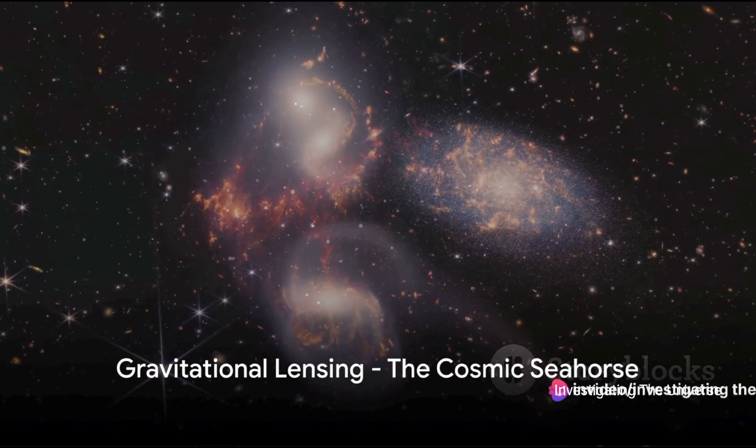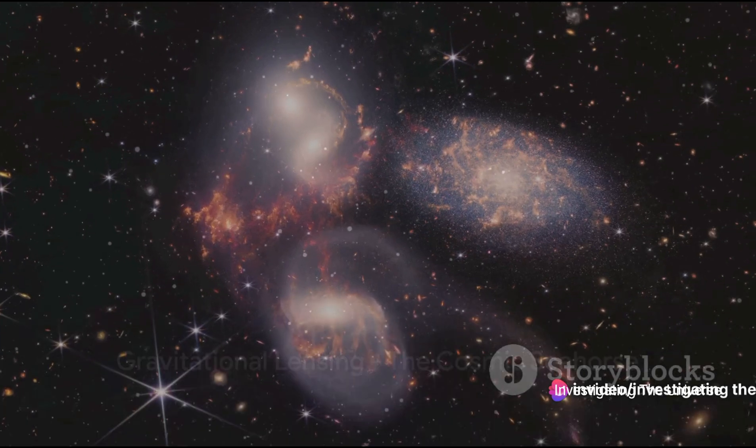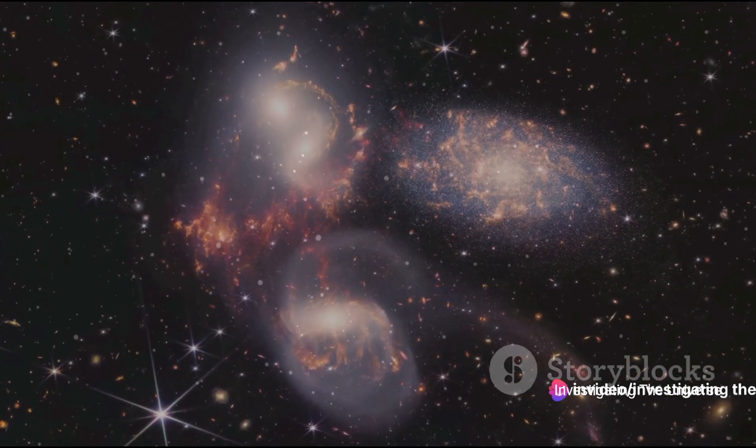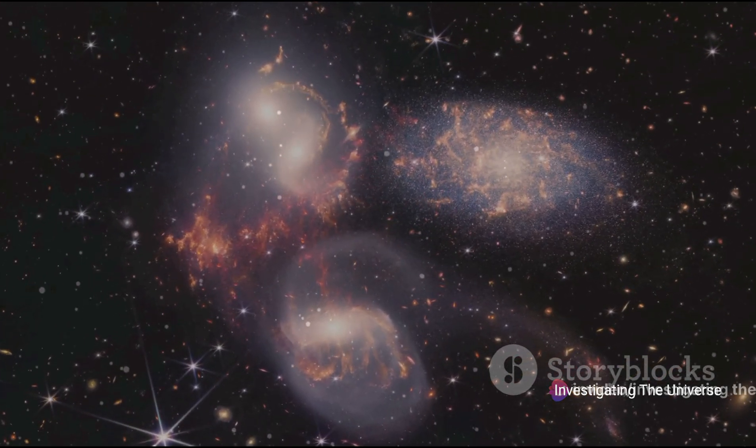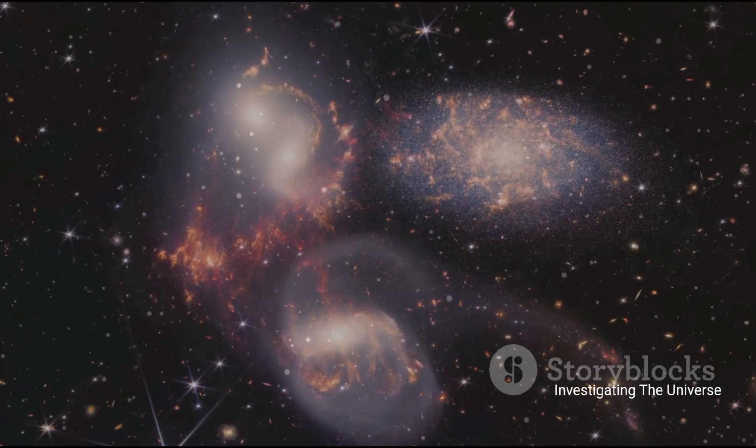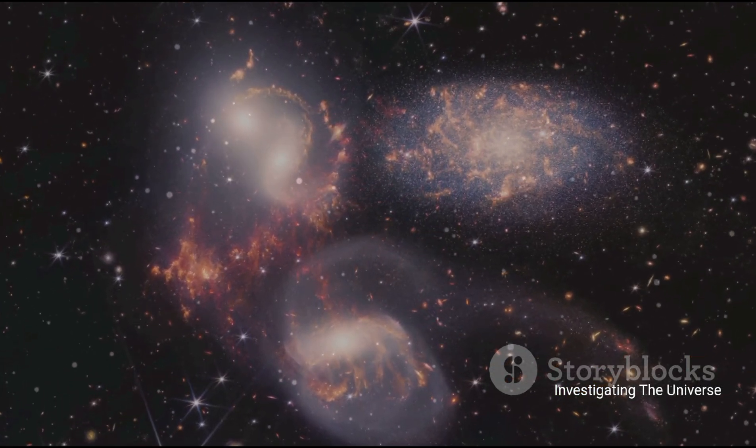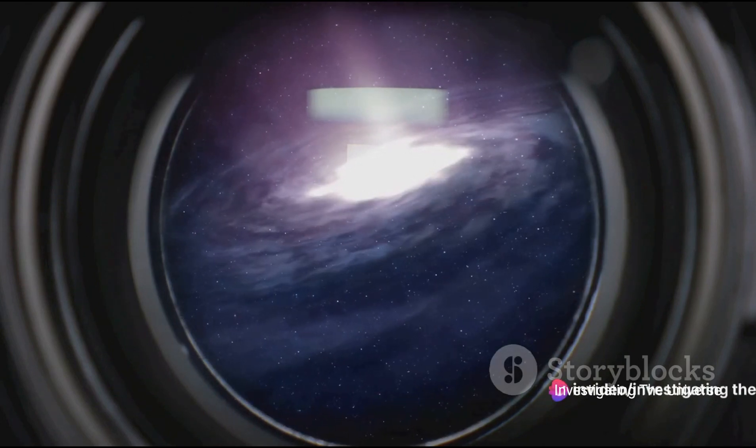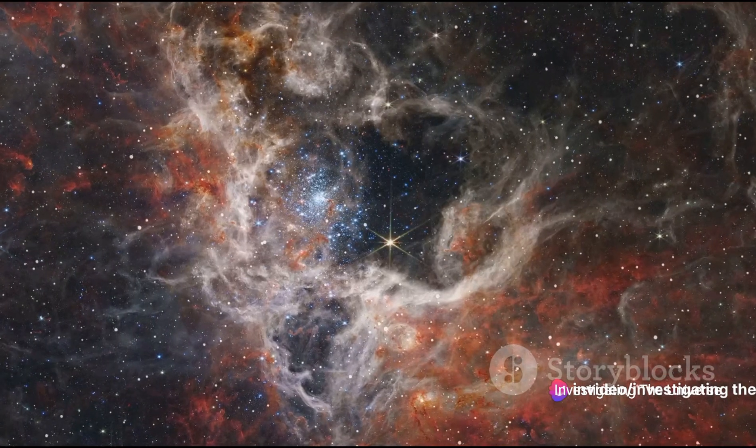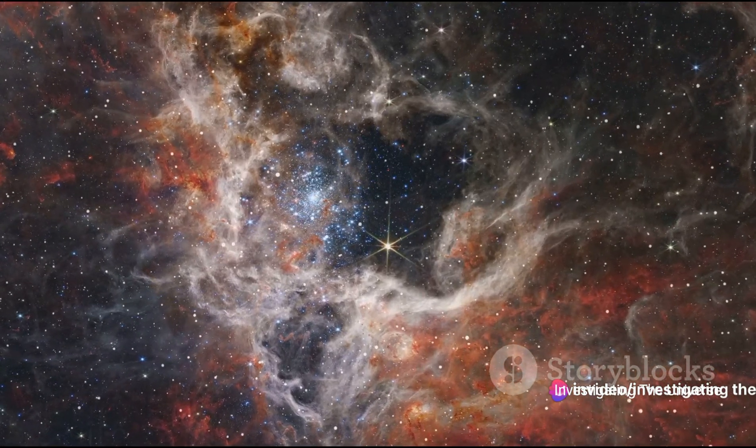Webb's next feat was capturing the remarkable phenomenon of gravitational lensing. Now, you might be wondering, what exactly is gravitational lensing? Well, it's a fascinating effect where the gravity of a massive celestial body, like a star or a galaxy, bends the light from objects behind it. This bending creates an effect similar to looking through a lens, hence the name.